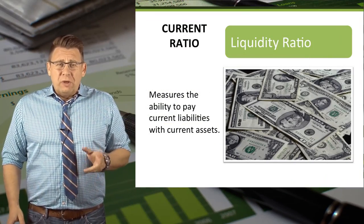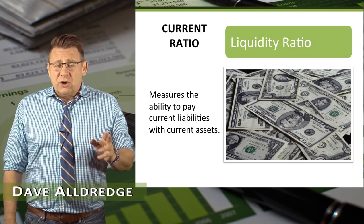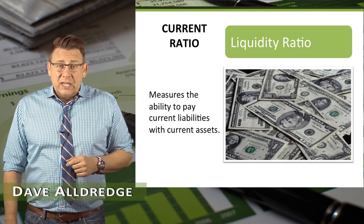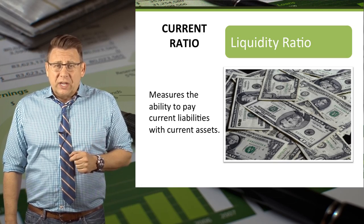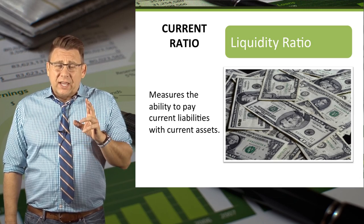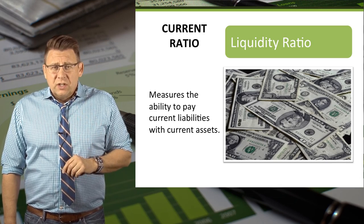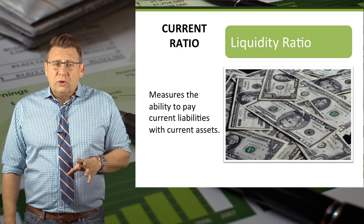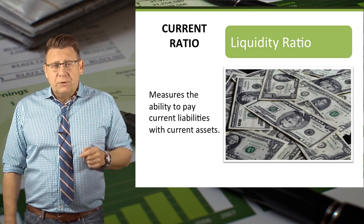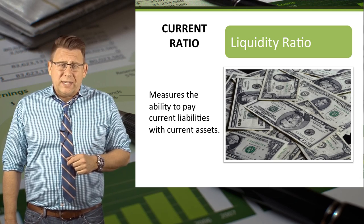The current ratio measures the ability to pay current liabilities with current assets. It's similar in concept to working capital, but rather than looking at a company's ability in terms of total dollars, the current ratio looks at a percentage or ratio. The current ratio is a measure of liquidity.